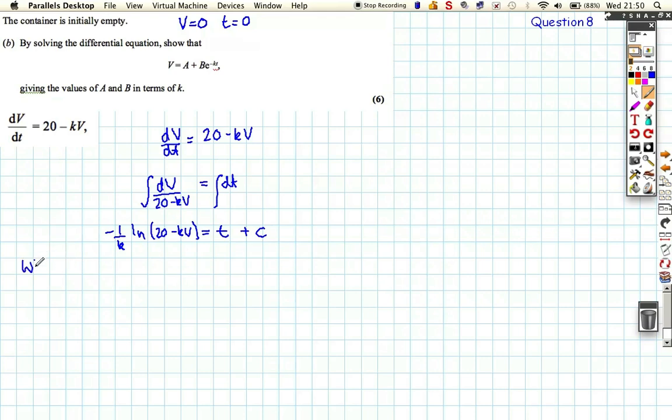Let's check to understand how I got that. Differentiating what was on the bottom is going to give us a minus k, so we need minus 1 over k log 20 minus kV. Now when V is 0, t is 0. That was the initial conditions. So let's put those in. So minus 1 over k log 20 is equal to, t is not, so it's just equal to c. So c is equal to minus 1 over k log 20.